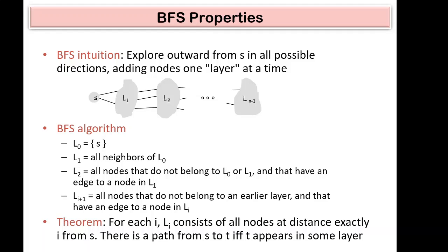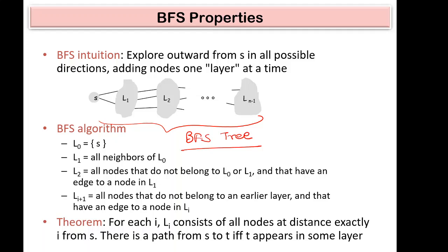There is a theorem which states that for each i, level Li consists of all nodes at distance exactly i from s. So any node you pick from level Li — for example from level 2 — is exactly two steps away from the source. If you pick any node from level Li, its distance d from s is exactly i.